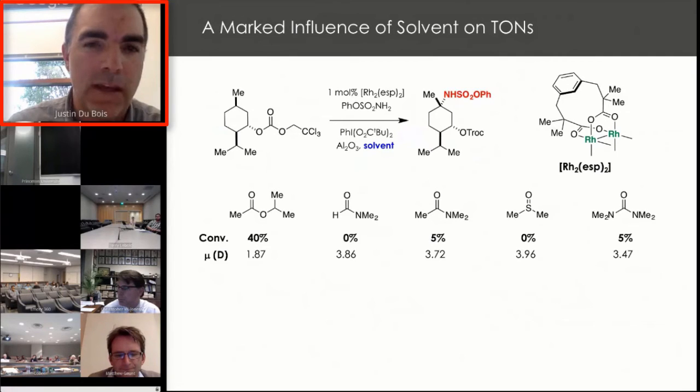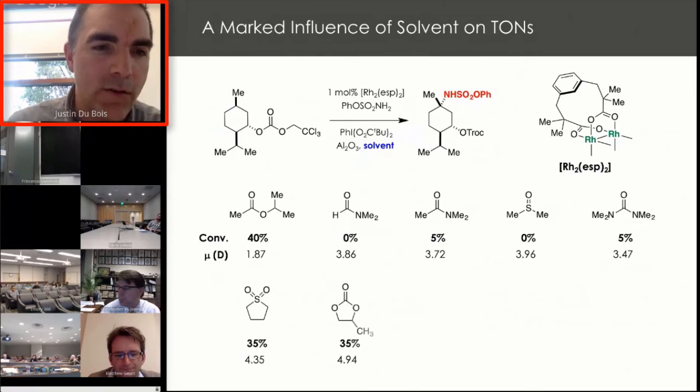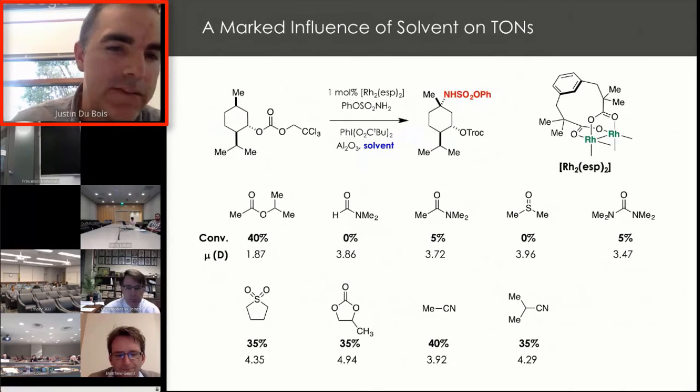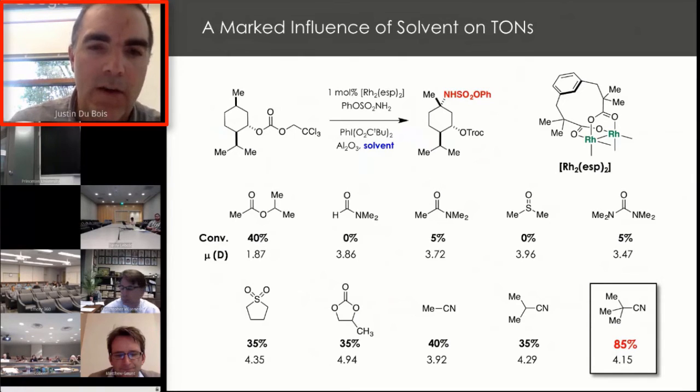In thinking about other solvents, we've known for some time, and this is work that came out of the Amgen lab some years ago, that isopropyl acetate had been an effective solvent for intramolecular C-H amination. What we'd like to do is use more polar solvents with a higher dipole moment, which we think would be stronger coordinating ligands. What you'll see is that the obvious solvents you would choose, dimethyl formamide or dimethylacetamide, are all deleterious to reaction performance.